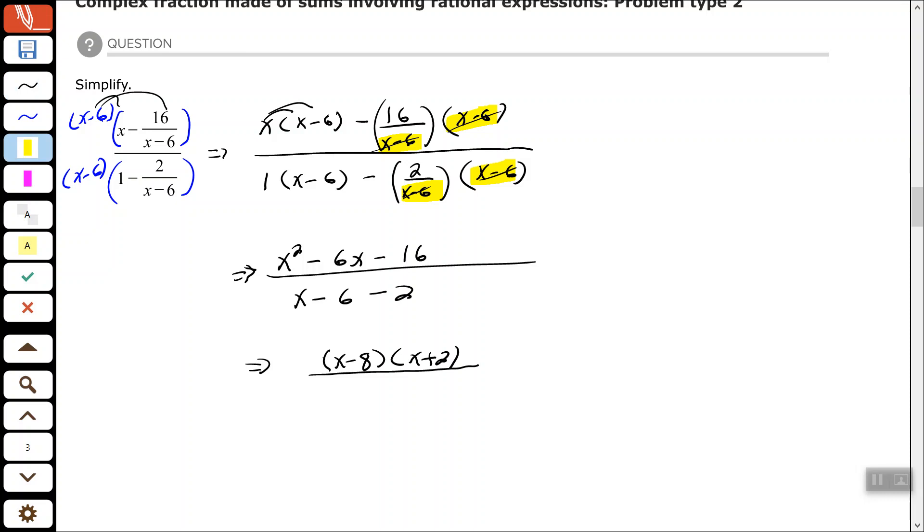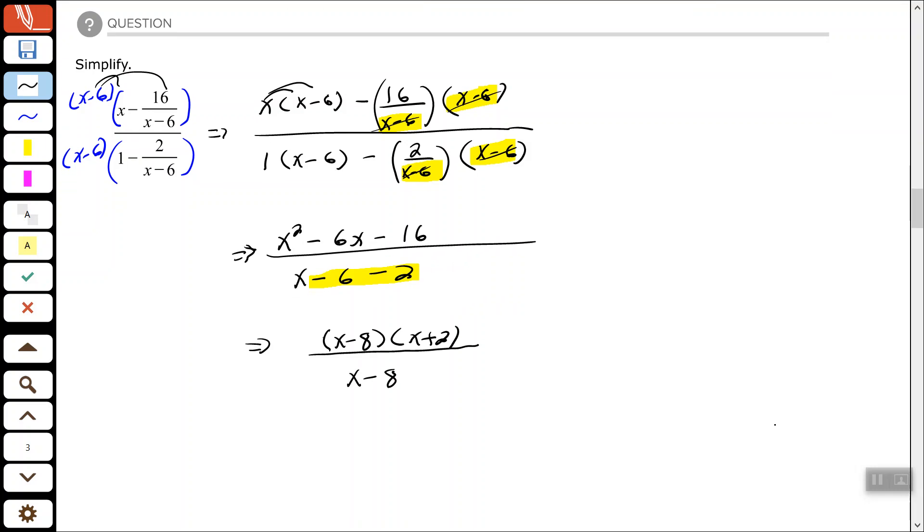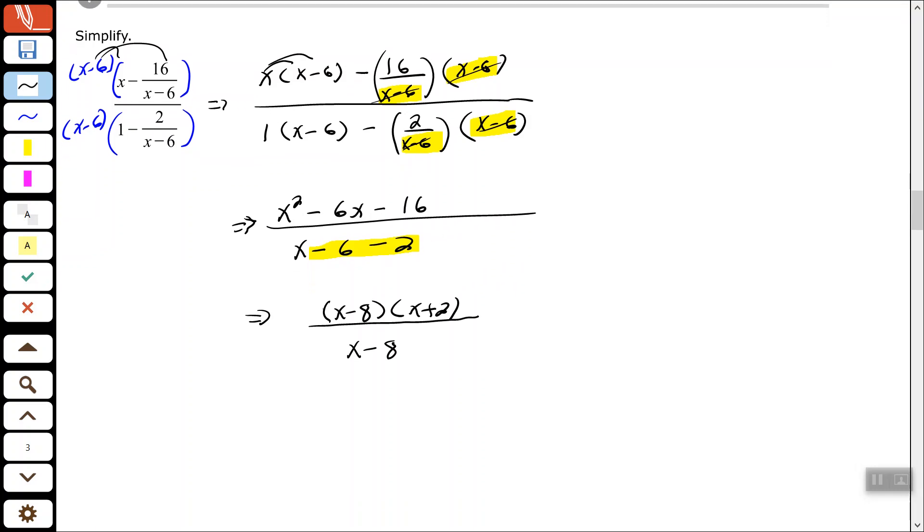In my denominator, I need to combine the like terms, minus 6 minus 2, which gives us minus 8. So x minus 8. And then last but not least, we have common binomials in the numerator and denominator that will cancel each other out. So my final answer would just be x plus 2.